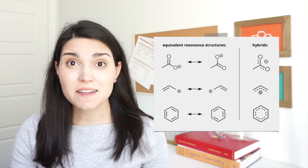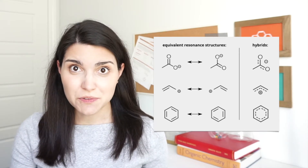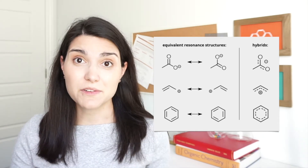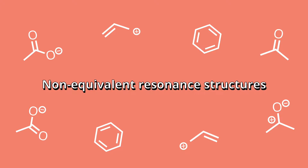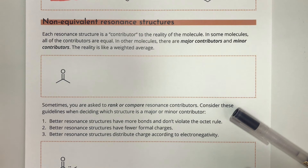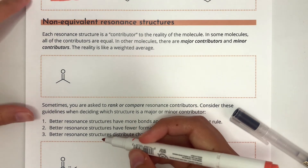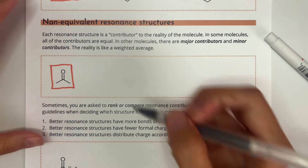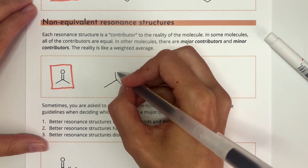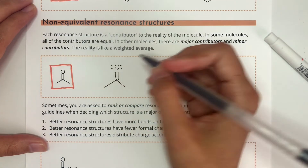If you keep practicing lots of examples like this, drawing resonance structures is going to become second nature to you. You might have noticed something about all of the examples we've used so far: with acetate, benzene, and the allyl cation, the two resonance structures we drew for each molecule were equivalent to one another, and the hybrid is exactly in between the two structures. However, there are many molecules that have what we call non-equivalent resonance structures, where there are major and minor contributors.